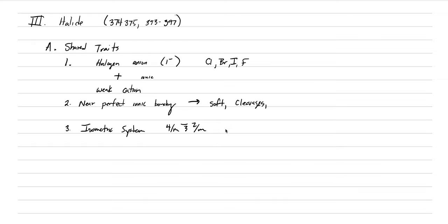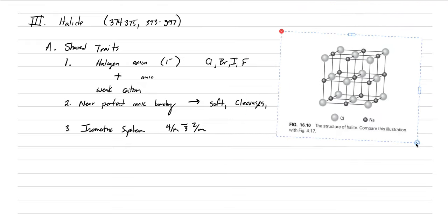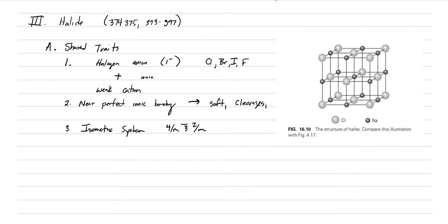Specifically in the crystal class 4/m̄3 2/m — these are properties that all the halides share. Looking at this image from the textbook, we see great sphericity in these drawings, and that's how I want you to visualize the ions: the weakly positive cations and the negative anions of the halogens.